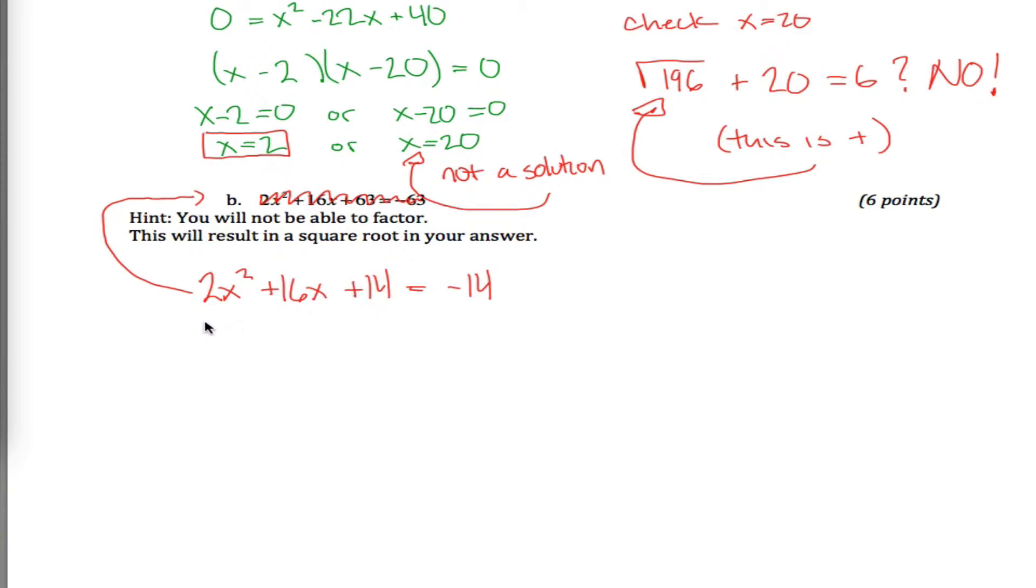So when we're completing the square, what you want to do is first get all your constant terms over on the other side of the equation. What I mean by that is, let's subtract 14 from both sides to get here. And then the next step is, our completing the square method only works when the leading coefficient is a 1. So right now it's a 2, but I could make it a 1 if I divided everything on both sides of the equation by 2. I'll give me x squared plus 8x is equal to negative 7.